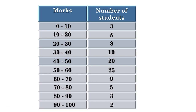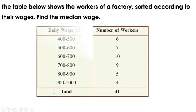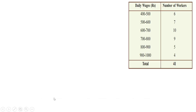Now let us take a problem and learn how to find the median. The table below shows the workers of a factory sorted according to their wages. Find the median wage. There are 41 workers. The median is the middle value — we have to calculate the daily wage of the worker in the middle when workers are arranged from the least to the most earning. Since there are 41 workers, the 21st worker is at the middle, and therefore his wage is the median. First, let us prepare a cumulative frequency table.